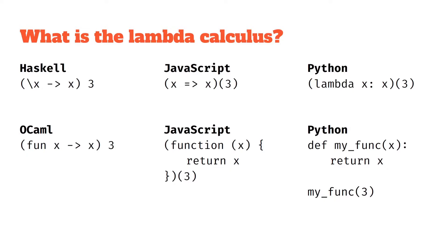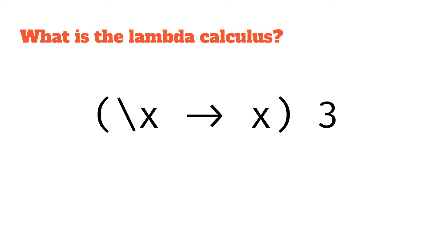So what does that actually look like in lambda calculus? It looks something like this, very similar to Haskell syntax. On the left we've got what we're going to call function abstraction. The backslash x defines a parameter x, we've got an arrow, and everything to the right hand side of the arrow is the function body. In this case it's just x, so it basically means return x.